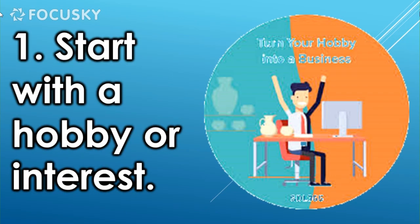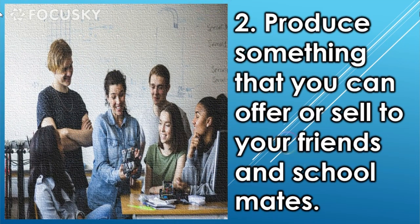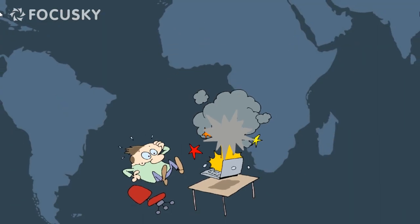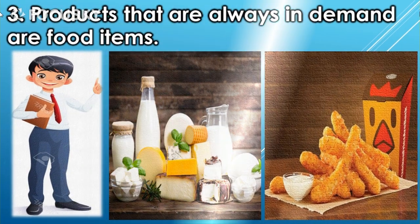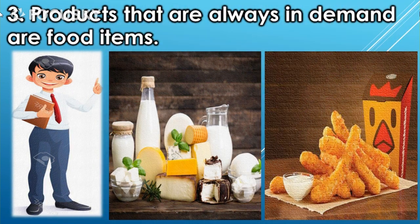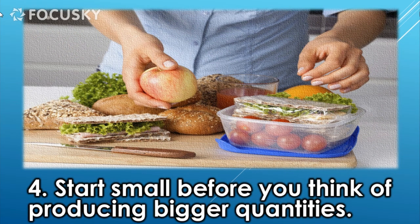One: start with a hobby or interest to produce something that you can offer or sell to your friends and schoolmates. Three: products that are always in demand are food items. Four: start small before you think of producing bigger quantities.